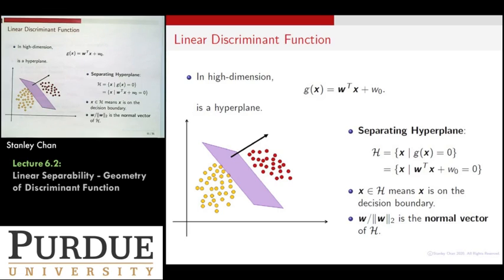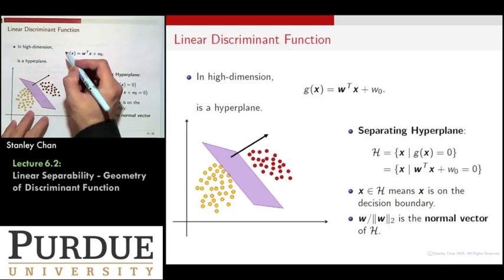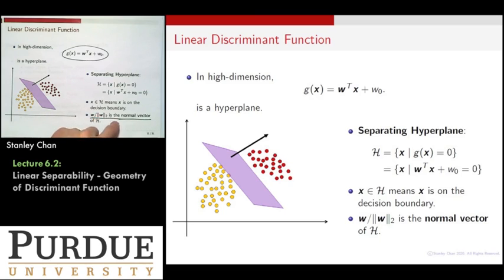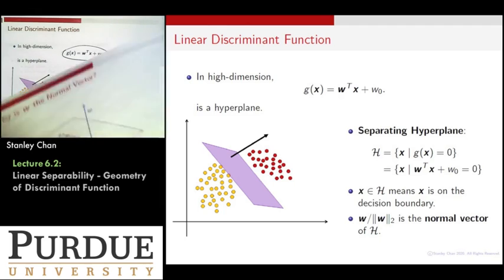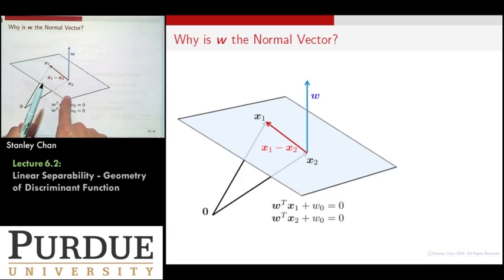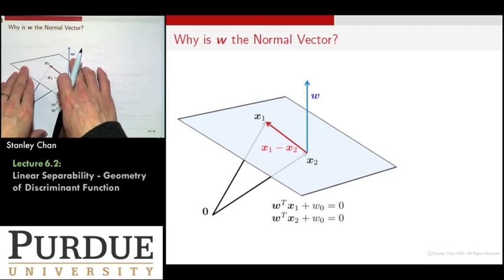Now I want to convince you why this is the normal vector. Given this equation, I claim that the normal vector is w divided by the 2-norm of w. Why is this the normal vector of the separating hyperplane? I want to make sure this geometry is clear, so let me do the following analysis. Suppose we have two points on this plane. I want to show that the perpendicular direction to the plane — the normal direction — is indeed this w.